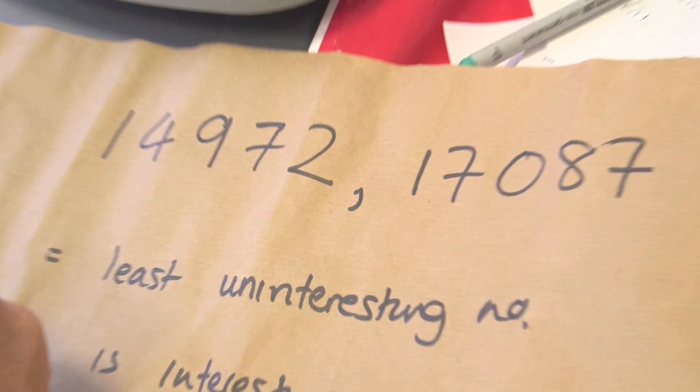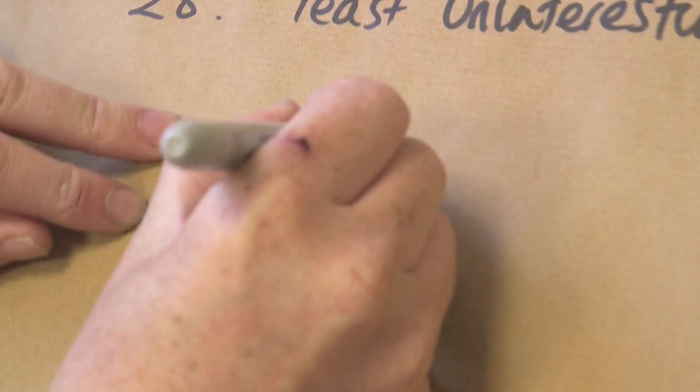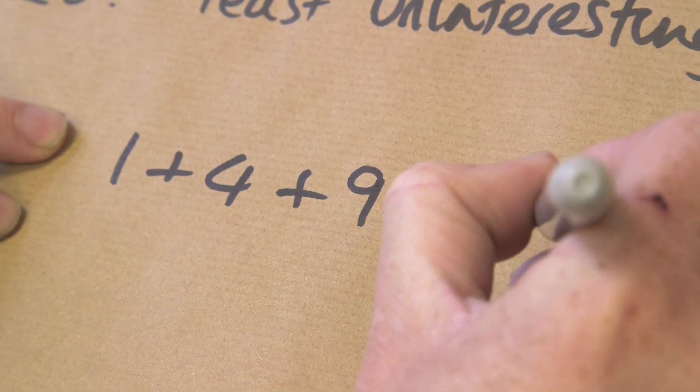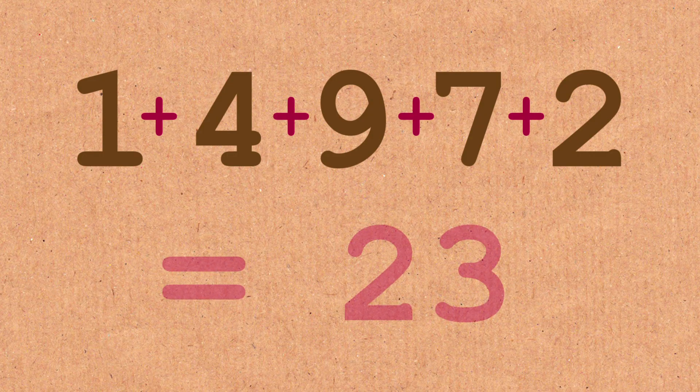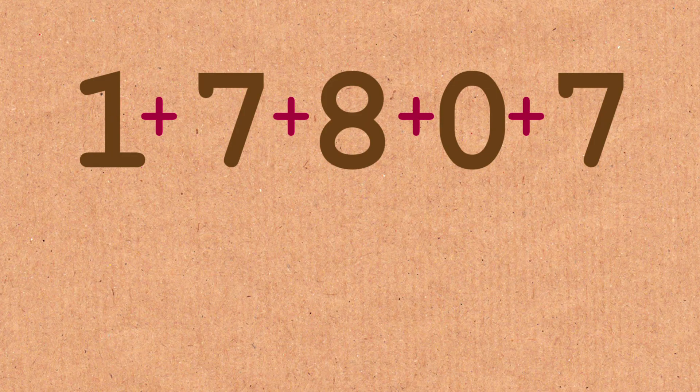But let's come back to these two numbers at the top. All numbers are interesting — this is Numberphile — so these must be interesting. When I found out about these particular numbers not appearing in the OEIS, I thought there's got to be something interesting about them. So I was playing around with them. Let's calculate the cross sum — that's when you take all the digits and just add them up. So in this case it's 1 + 4 + 9 + 7 + 2. What do you get? You get 23. Now look at the other one: 1 + 7 + 0 + 8 + 7. You get 23 as well.